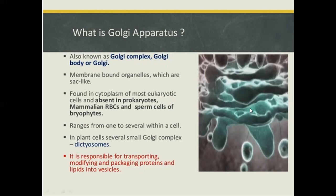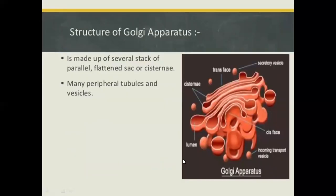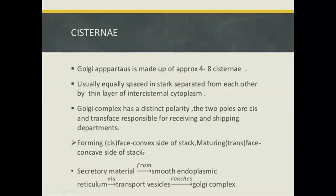The structure of the Golgi apparatus is made up of several stacks of parallel flattened sacs or cisternae, many peripheral tubules and vesicles — including secretory vesicles, trans-face structures, cisternae, lumen and incoming transport vesicles. The Golgi apparatus is made up of approximately 4 to 8 cisternae, usually equally spaced in stacks, separated from each other by a thin layer of inter-cisternal cytoplasm.